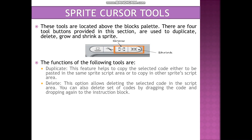If we are using a block palette, we can delete the code in the script area by dragging and dropping it. When the code is dragged and dropped onto the blocks palette, the coding is deleted from the script area. So we can delete code in these two ways.